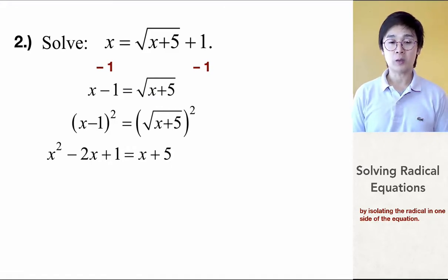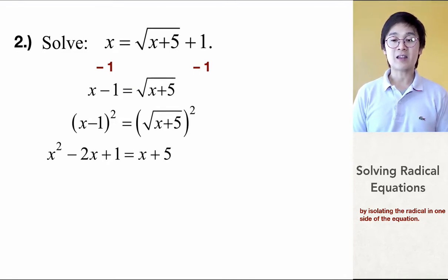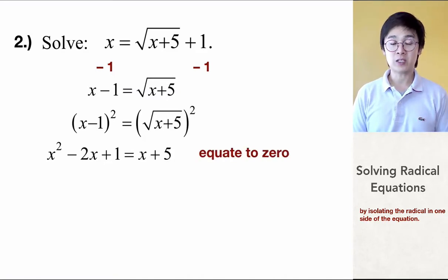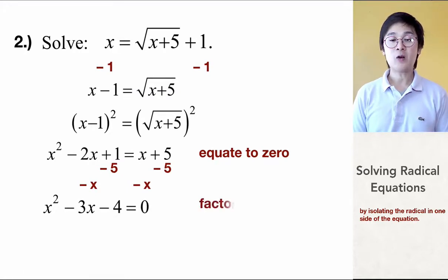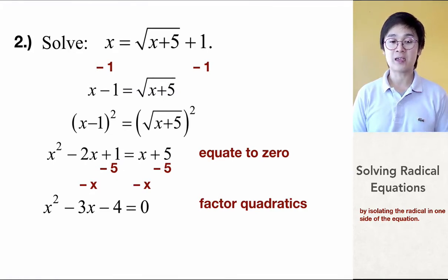Now that we have a polynomial without any radicals, the next thing is to equate the equation to 0. To do that, we're going to subtract 5 on both sides and subtract x on both sides, so it will equal to 0. In the process, we'll have x squared minus 3x minus 4 is equal to 0. So now we have a familiar quadratic equation that we can factor using the big X method. We're looking for factors of negative 4 that give us negative 3 when added. The two factors are x minus 4 and x plus 1, giving us x minus 4 times x plus 1 equal to 0.